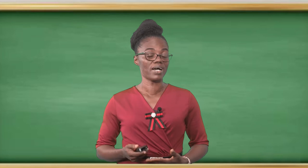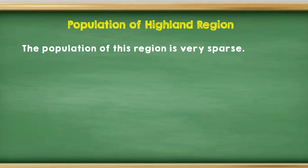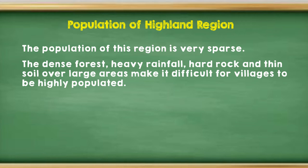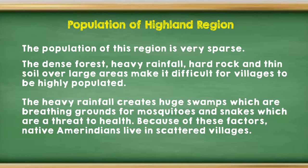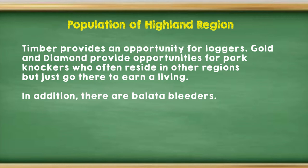Next, we will look at the population of the highland region. The population of the highland region is very sparse, and there are a few reasons for that. One, the dense forest — the heavy rainfall, hard rock, and thin soil over large areas make it difficult for villages to be highly populated. The heavy rainfall also creates huge swamps, which are breeding grounds for mosquitoes and snakes, which are a threat to health. Because of these factors, native Amerindians live in scattered villages. The resource timber provides an opportunity for loggers, and gold and diamond also provide opportunity for pork knockers.